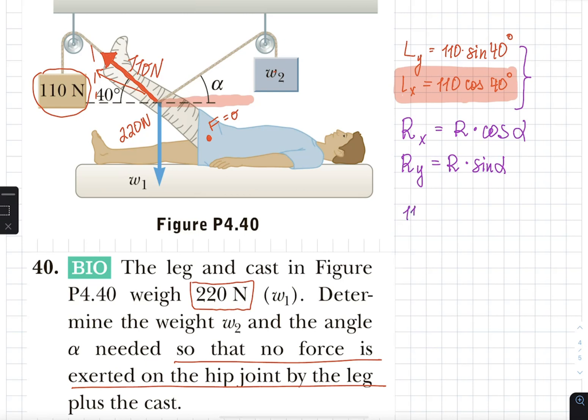So I can say 110 cosine of 40 should be equal to r cosine of alpha. And I also know that my 110 sine of 40 plus r sine of alpha should be equal to 220 newtons.